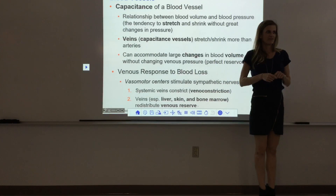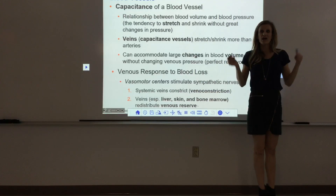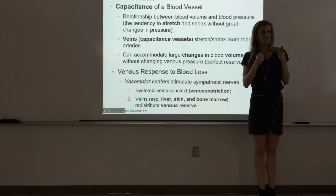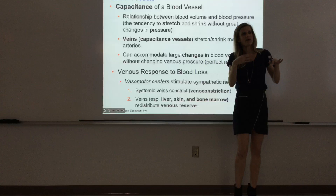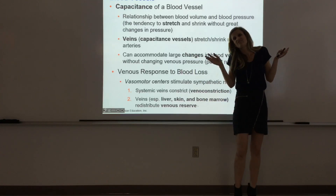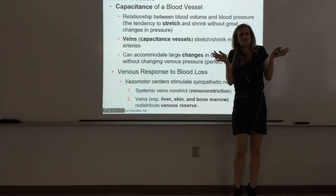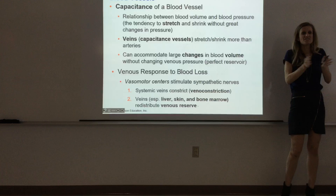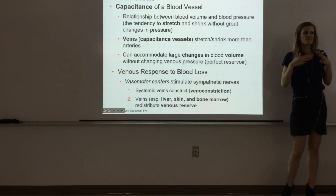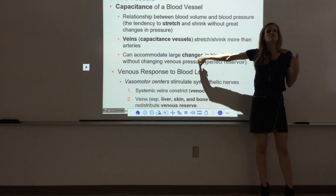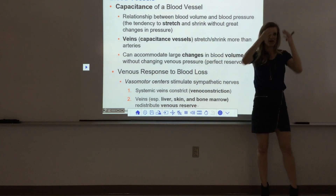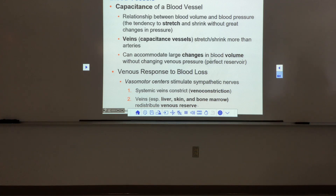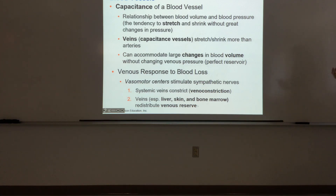Don't confuse capacitance with elasticity — they seem similar but are not the same. Elasticity, as in the arteries, involves high pressures: it takes a lot of pressure to stretch them and then they snap back. Capacitance is more passive — if there's more volume, the vein gets bigger; if there's less volume, it gets smaller. No big pressure changes required. This is really important because it allows veins to accommodate large changes in blood volume during hemorrhage or injury, making them an excellent reservoir for the venous reserve.